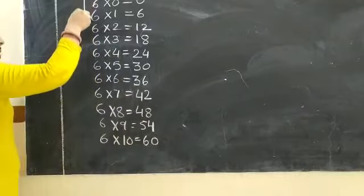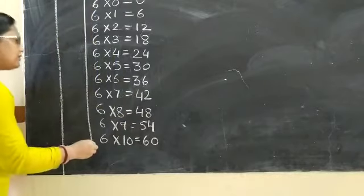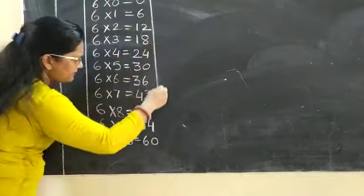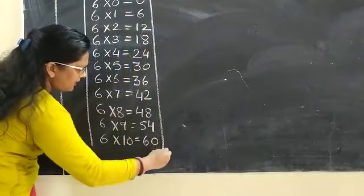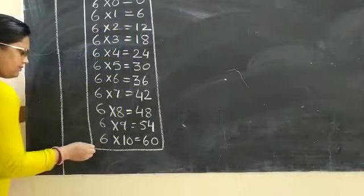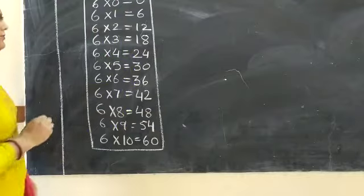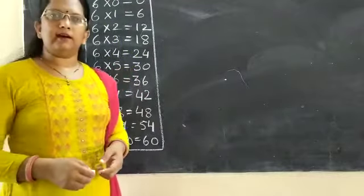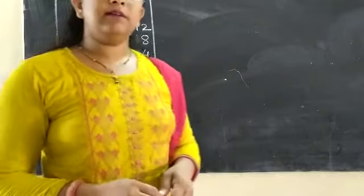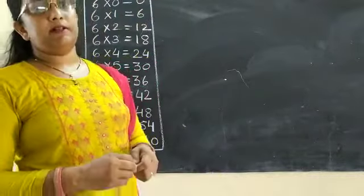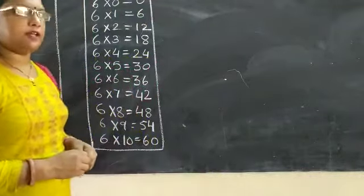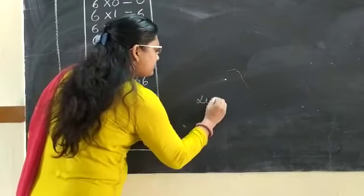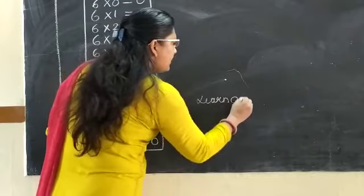Now, again draw the margin line. Aise aapko line grow karni hai. So, all of you write down this table 2 times and learn. After that we are doing dodging of tables. Learn and try.